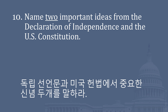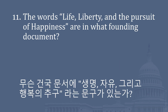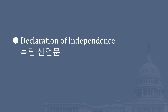Name two important ideas from the Declaration of Independence and the U.S. Constitution. Equality. Liberty. Social contract. Natural rights. Limited government. Self-government. The words 'Life, Liberty, and the pursuit of happiness' are in what founding document? Declaration of Independence.